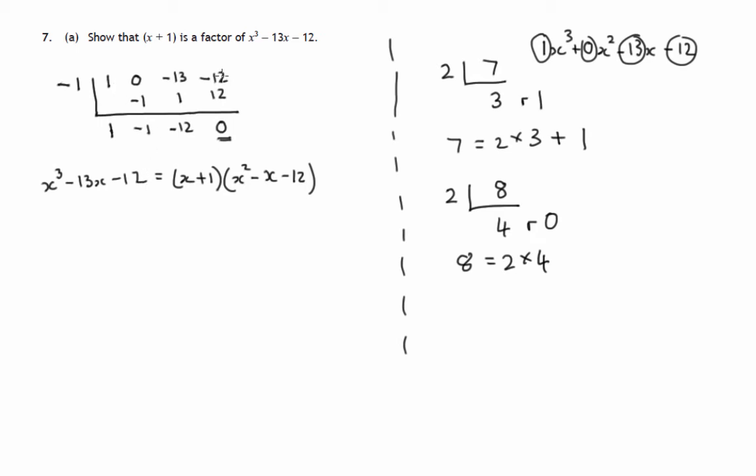where this polynomial here, x cubed minus 13x minus 12 is x plus 1 times x squared minus x minus 12 with a remainder of 0. Since the remainder is 0, x plus 1 is a factor. So that's part A successfully shown that x plus 1 is a factor of that and given a reason, stated that the remainder is 0.